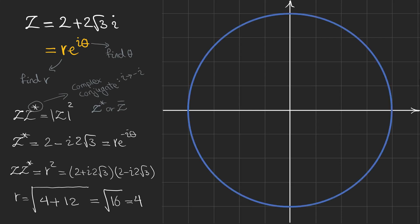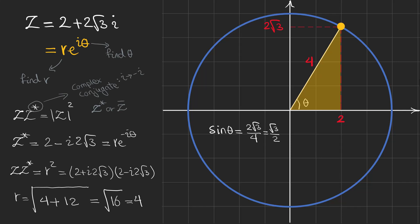We expect to find our complex point on a circle of radius equal to the magnitude. The real part is 2, so we can identify the imaginary component, and the magnitude is 4. To find theta, we use the right triangle with all side lengths known. Using sine of theta equals square root of 3 over 2, we find theta equals pi over 3, or 60 degrees, plus 2n pi, where n is any integer — because rotating by 2 pi returns to the same point.